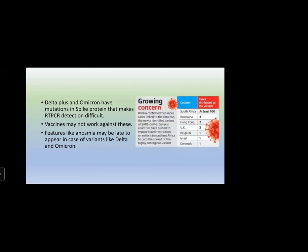Delta Plus and Omicron have mutations in the spike protein that make RT-PCR detection a bit difficult. Vaccines may also not work against these variants because the immune system recognizes mainly the spike protein — the outermost protein expressed on the sun-ray-like spikes of SARS coronavirus. Features like anosmia and loss of taste may be late to appear or may not appear in variants like Delta and Omicron.